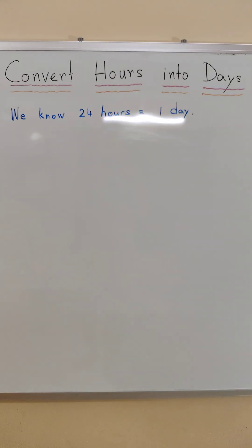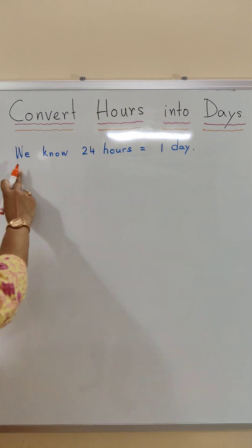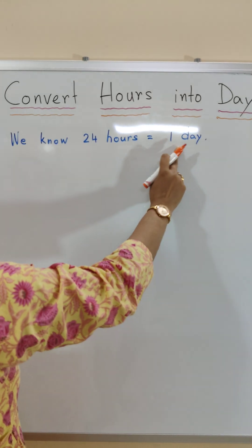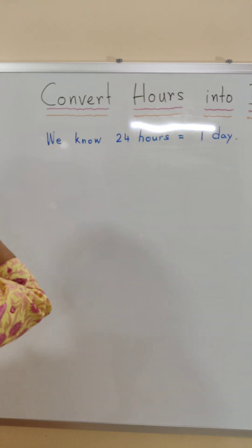Today we will learn how to convert hours into days. We know 24 hours is equal to 1 day. So let's do a few examples.